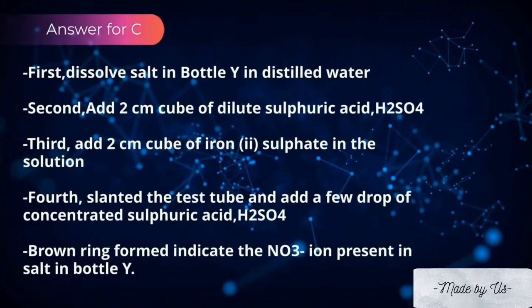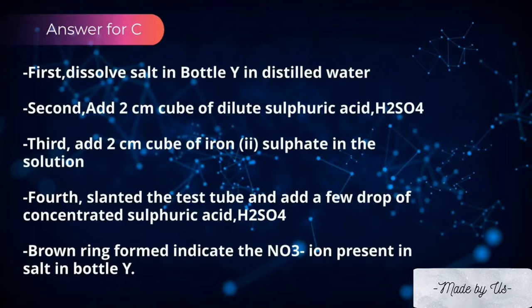For part C, first dissolve one spatula of the salt from bottle Y in distilled water. Second, add 2 cm³ of dilute sulfuric acid. Third, add 2 cm³ of iron(II) sulfate into the solution. Fourth, slant the test tube and add a few drops of concentrated sulfuric acid, then slowly set the test tube upright. A brown ring forming indicates the presence of nitrate ion in the salt in bottle Y.